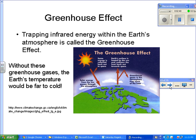The trapping of infrared energy within the earth's atmosphere is called the greenhouse effect. Without these greenhouse gases, the earth's temperature would be far too cold. We need these greenhouse gases to keep our planet warm. However, if we have too much of these greenhouse gases, the planet's temperature is going to rise.